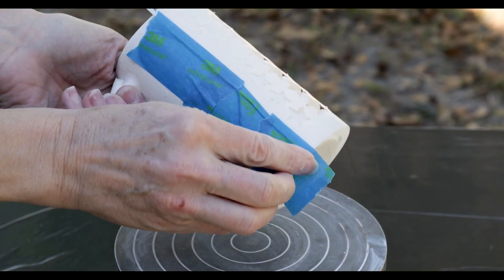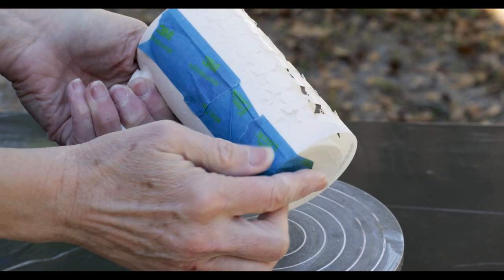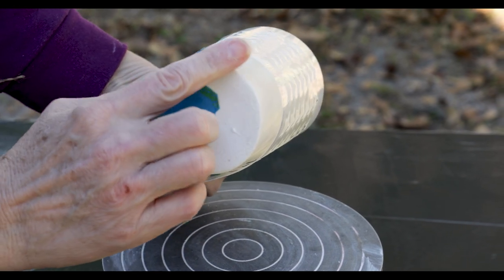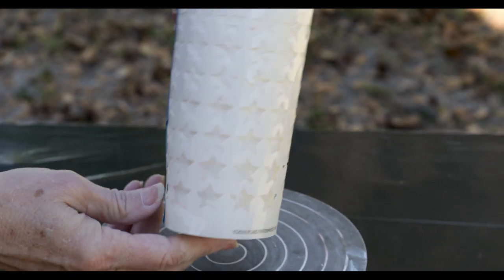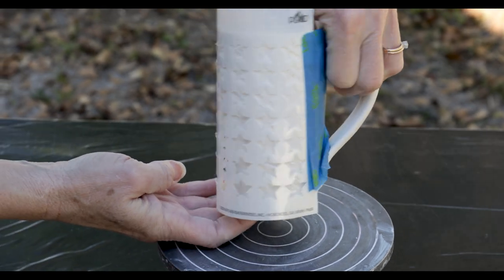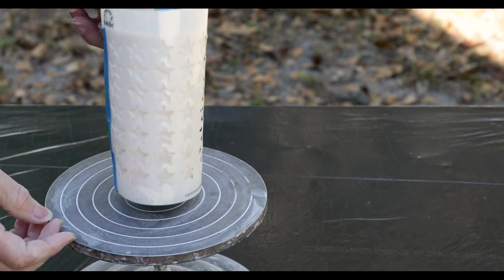For experiment number five, I took a star stencil that I found at the craft store and taped it to a tapered mug. The top part is flat to the surface, but the bottom is slightly raised off the mug. Let's see what effect that will produce.